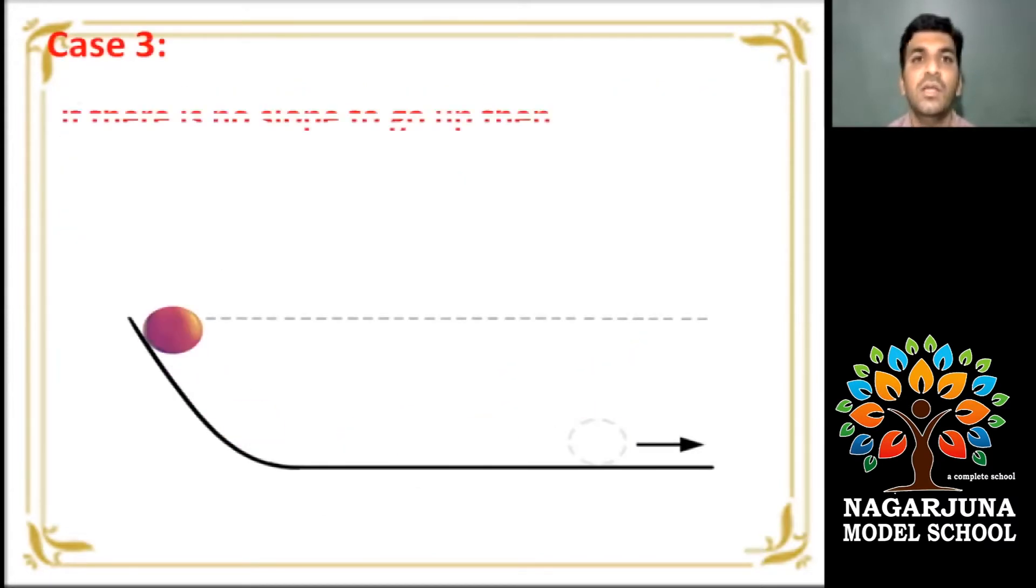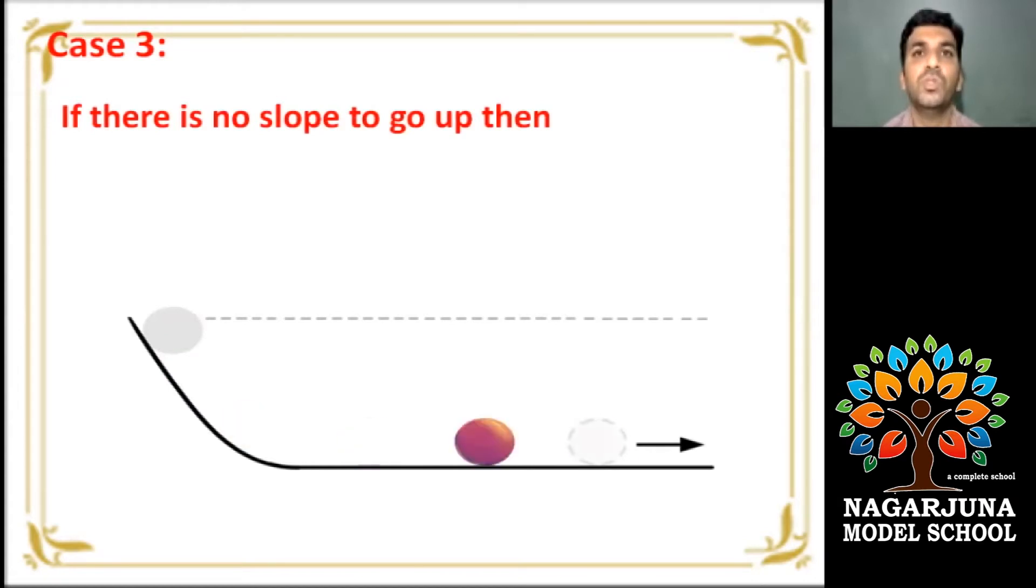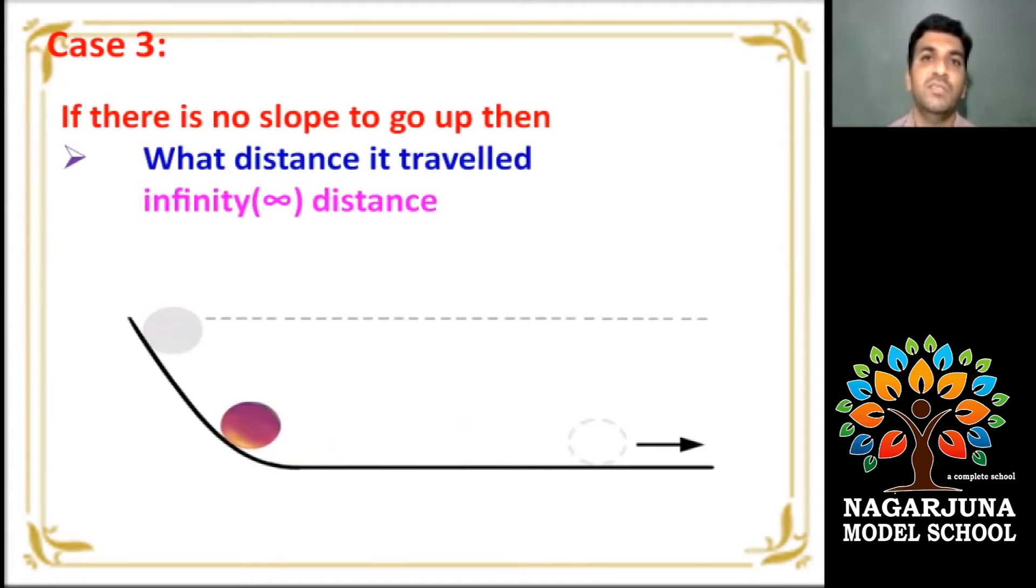In the case three, if there is no slope to go up, then what will happen? What distance it travelled? Yes. It's infinity distance. It's moving on continuously unless an external force act on it. That's fine.